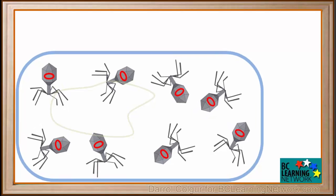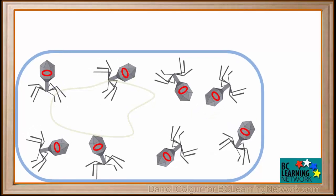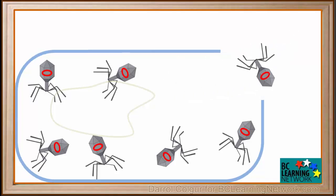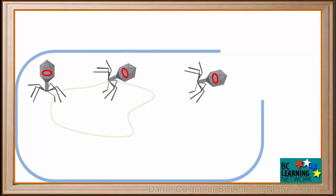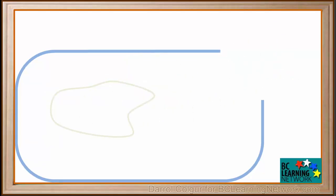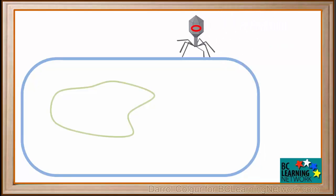Because there are so many copies formed, they cause the cell to swell, and eventually the cell wall ruptures. The newly produced viruses now leave the whole cell, and each one finds a new bacterial cell to infect. And the whole cycle repeats itself.